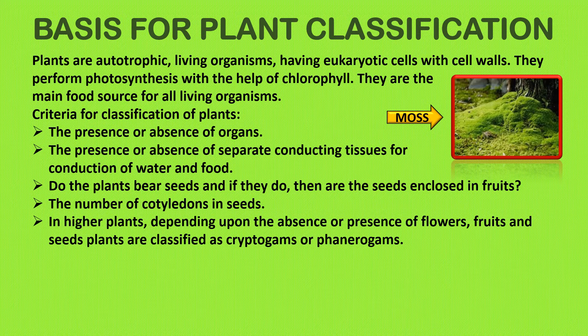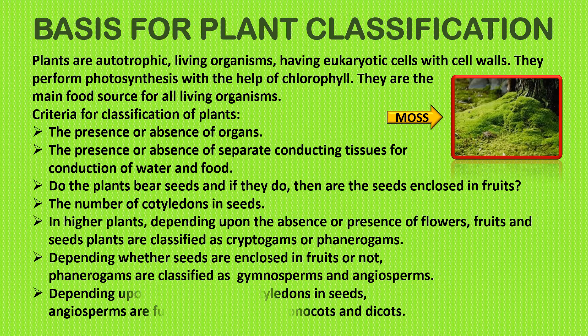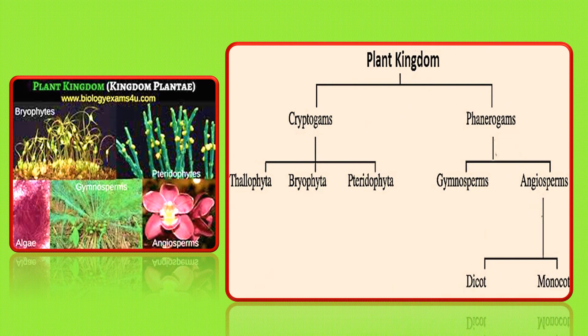In higher plants, another criteria is the absence or presence of flowers, fruits, and seeds. Plants are classified as cryptogams — non-flowering plants — and phanerogams, which have flowers. Depending on whether seeds are enclosed in fruits or not, phanerogams are further classified as gymnosperms and angiosperms. Then, by the number of cotyledons in the seeds, they are classified as monocots or dicots. Kingdom plantae is subdivided into cryptogams with three divisions — thallophyta, bryophyta, and pteridophyta — and phanerogams divided into gymnosperms and angiosperms.